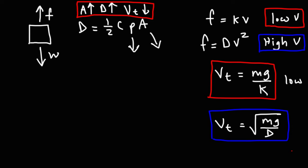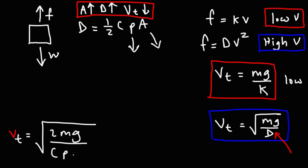If we replace D with its full expression, we get this form of the equation for terminal velocity: Vt equals the square root of 2mg divided by the drag coefficient times the density of the fluid times the projected area. The factor of 2 comes from the 1/2 in the drag formula. You can use that equation to get the terminal velocity for objects falling at high speeds.